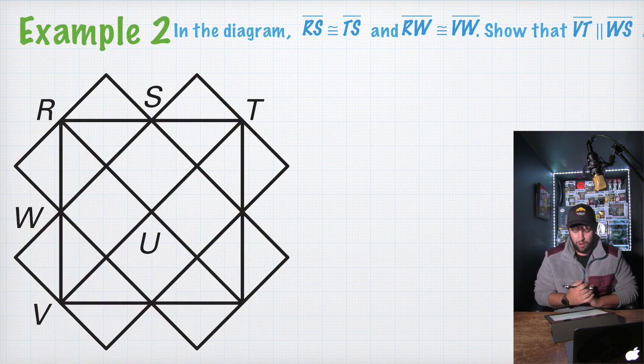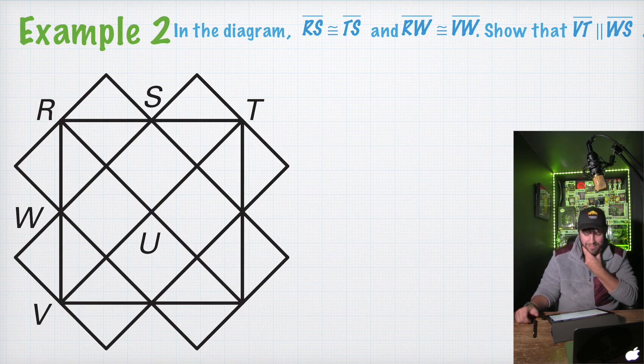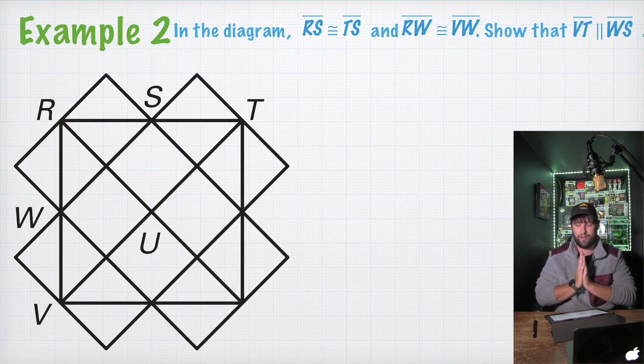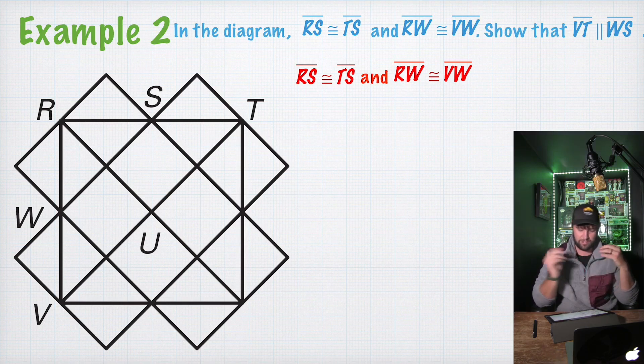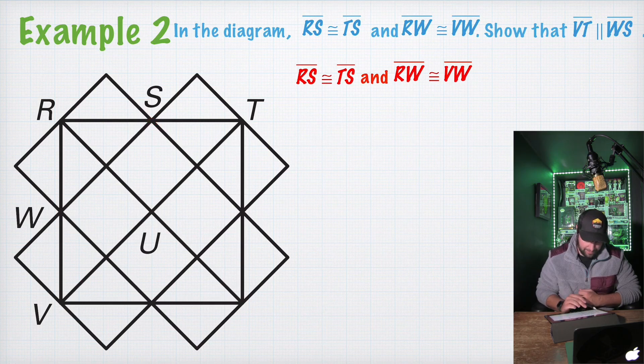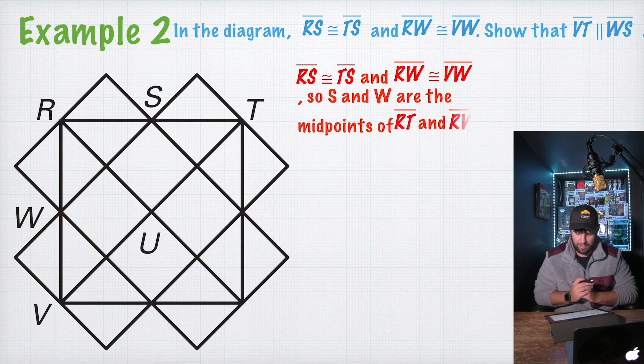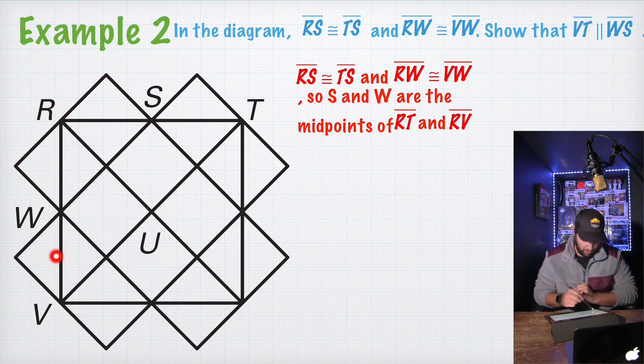So in the diagram, RS is congruent to TS and RW is congruent to VW. Show that VT is congruent to WS. So the first thing we're going to do is let's go ahead and write our givens down. We know that RS is congruent to TS and RW is congruent to VW. Which makes S and W the midpoints of those lines. So S and W are the midpoints of RT and RV.